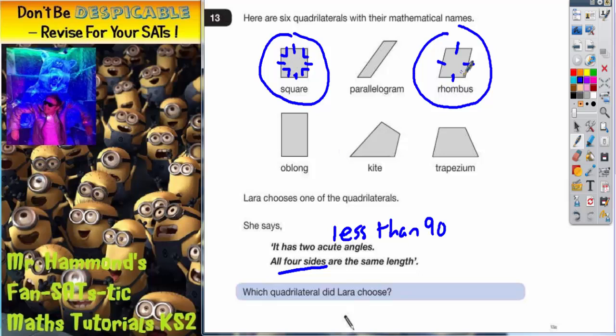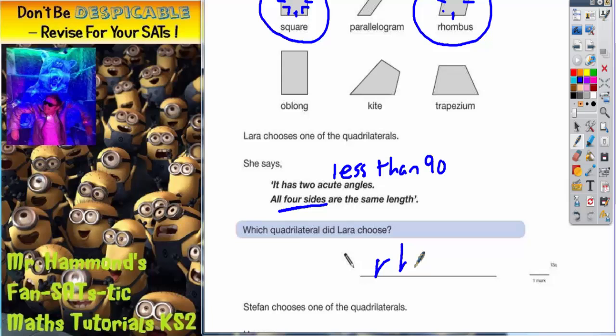The question is does a rhombus. Well a rhombus has got two acute angles in the two corners there. Those two angles are both less than 90. So the answer that we're looking for for part one of this question is rhombus.